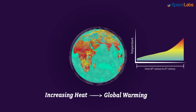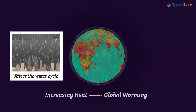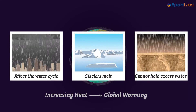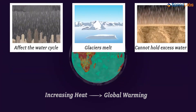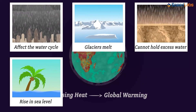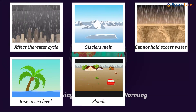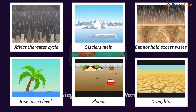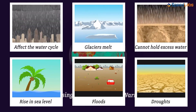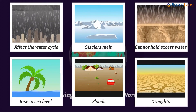This can create a chain of events. High temperatures affect the water cycle. Glaciers melt at an alarming pace, soil cannot hold excess water during rainfall, and sea levels rise. Both these events can cause floods. On the other hand, any change in the water cycle can also lead to droughts. These erratic climate changes are all results of deforestation.